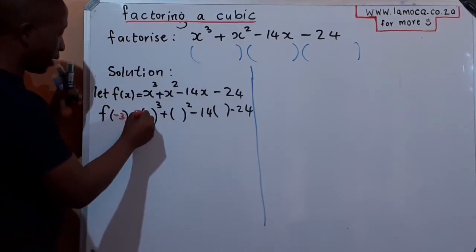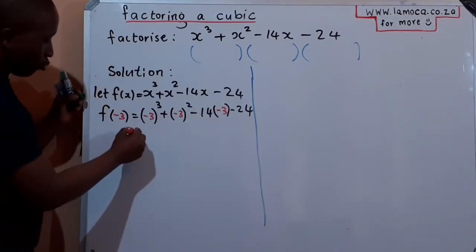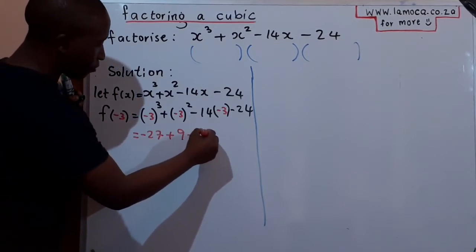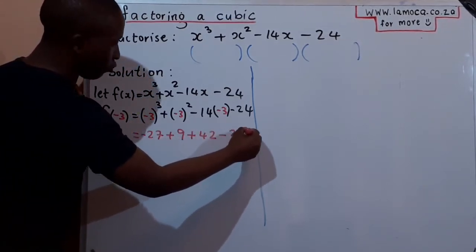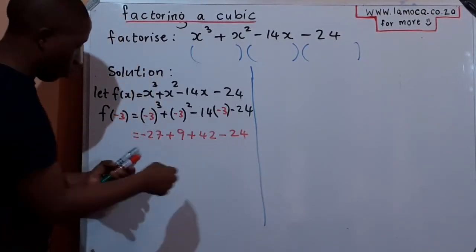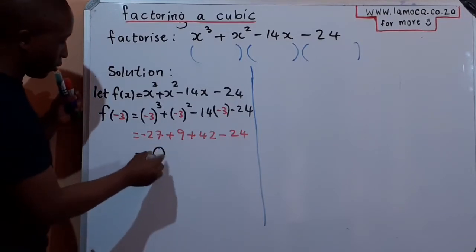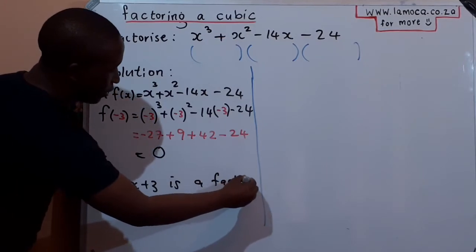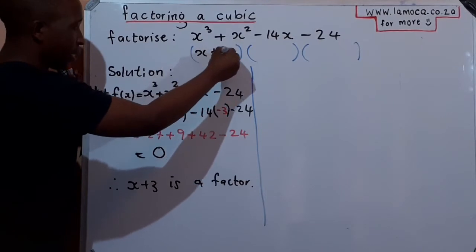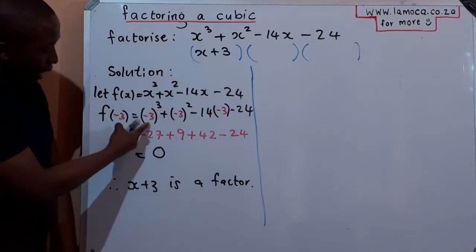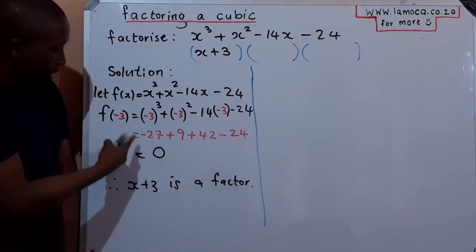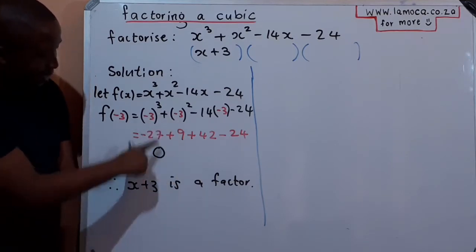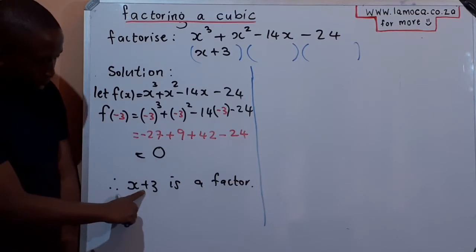If I substitute x = −3: (−3)³ = −27, (−3)² = +9, and −14×(−3) = +42, and the last term is −24. When you add all these values, the whole thing becomes zero. Therefore we conclude that (x + 3) is a factor of f(x) — that is our first factor. Remember: if you substitute a root of −3, your factor is x + 3, not x − 3. The sign of the root is always different from the sign in the factor.